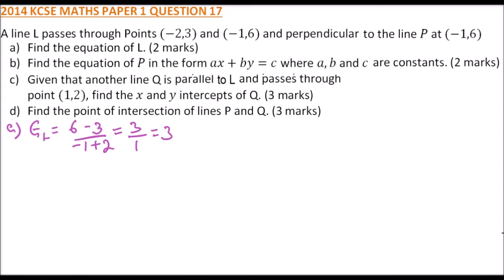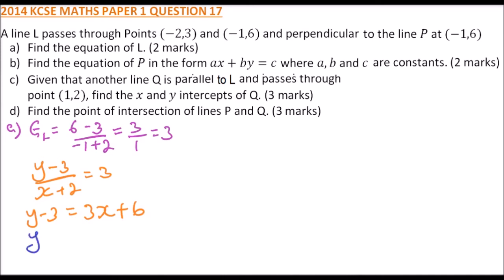Once you get the gradient you can find the equation. We use one of the points — let's use (-2, 3). So we say (y − 3) divided by (x − (−2)) equals 3. Cross multiply: y − 3 = 3x + 6. Taking −3 to the other side gives y = 3x + 9. That is the equation of L.